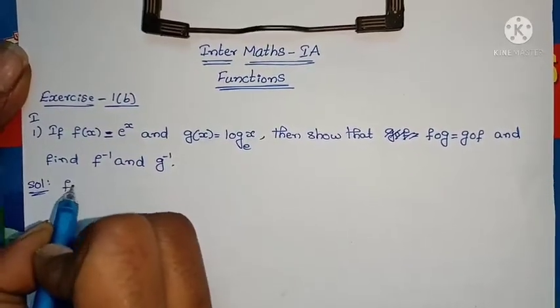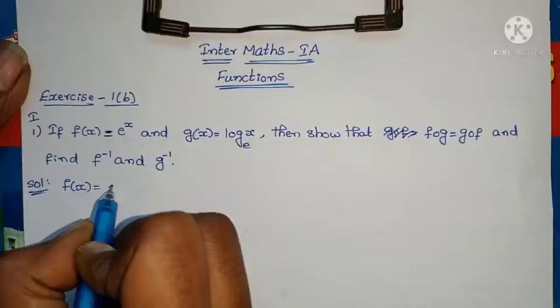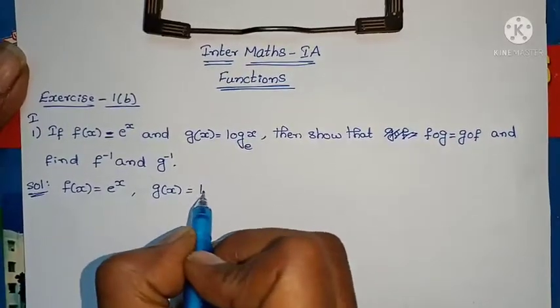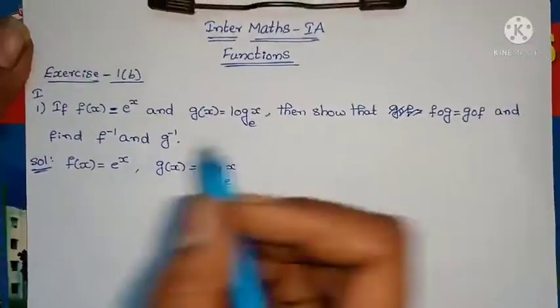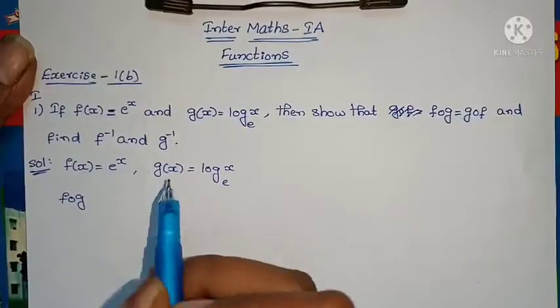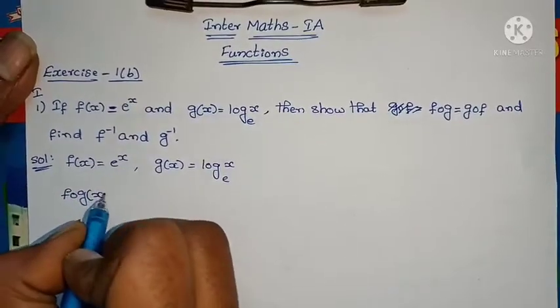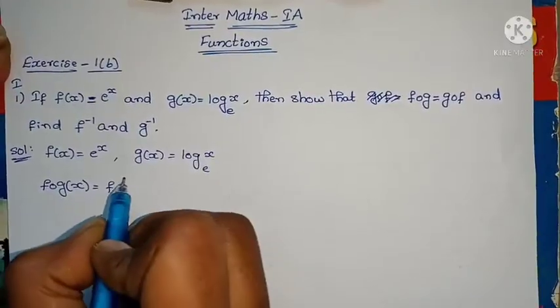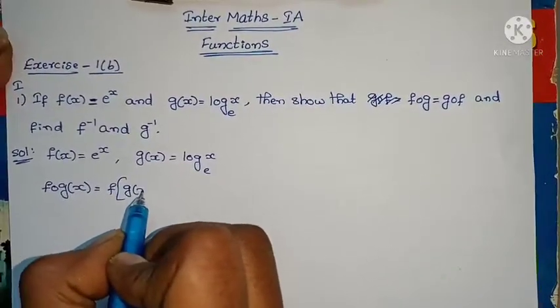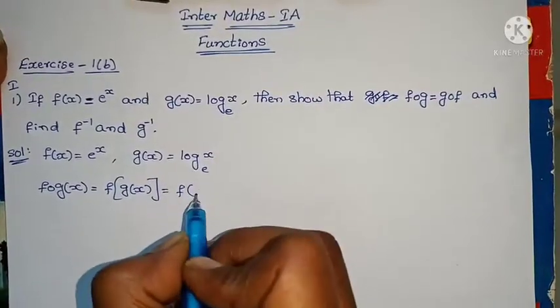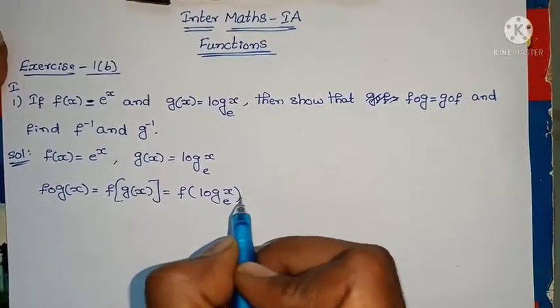If f(x) equals e^x and g(x) equals log_e(x), then show that f∘g equals g∘f and find f inverse and g inverse. Let's write the solution. First write what's given: f(x) = e^x and g(x) = log_e(x).